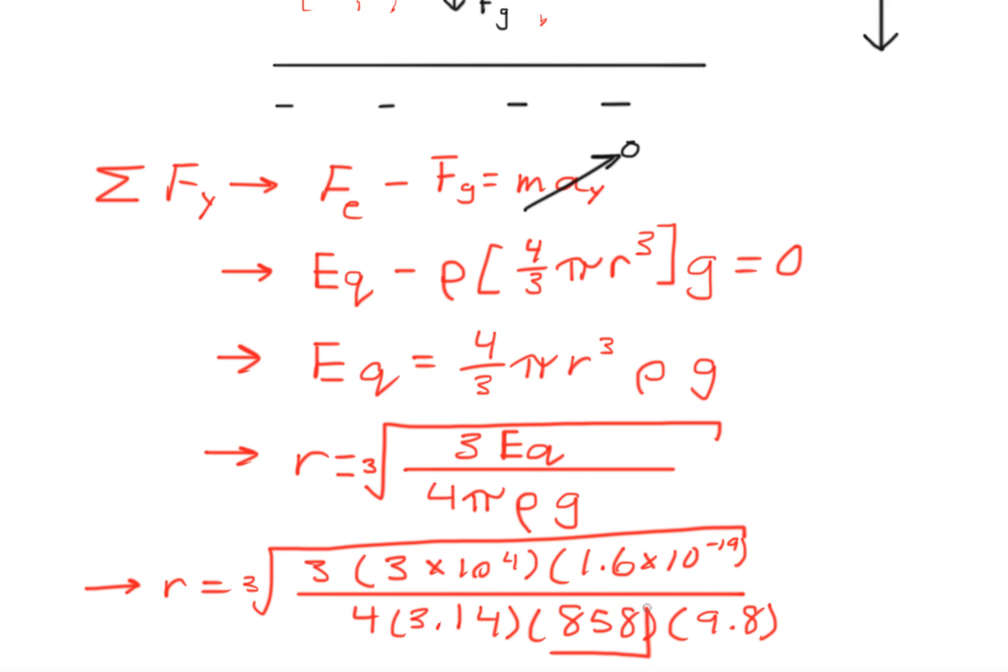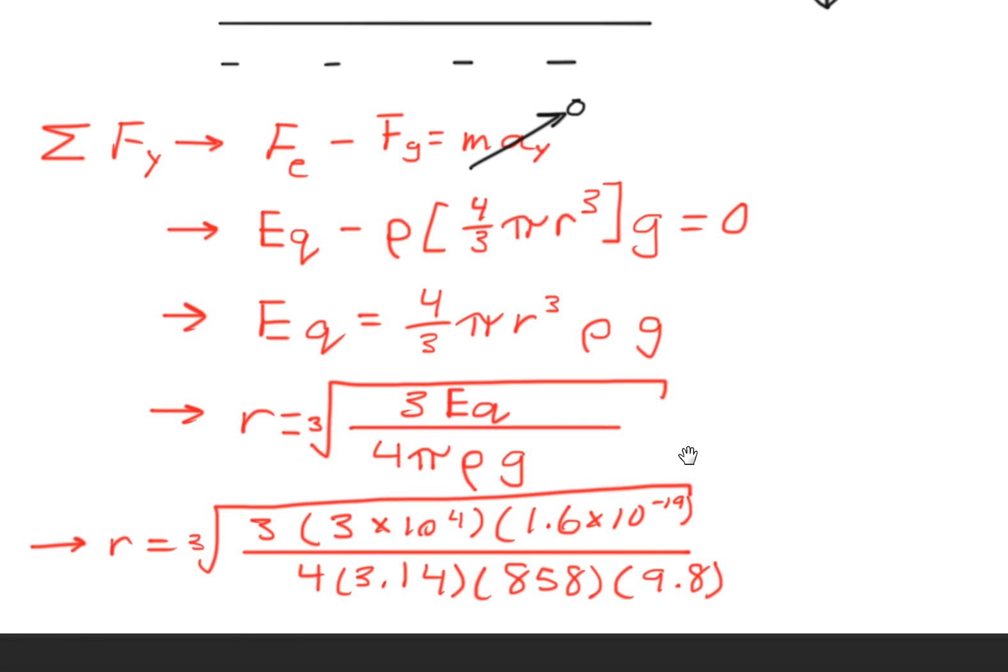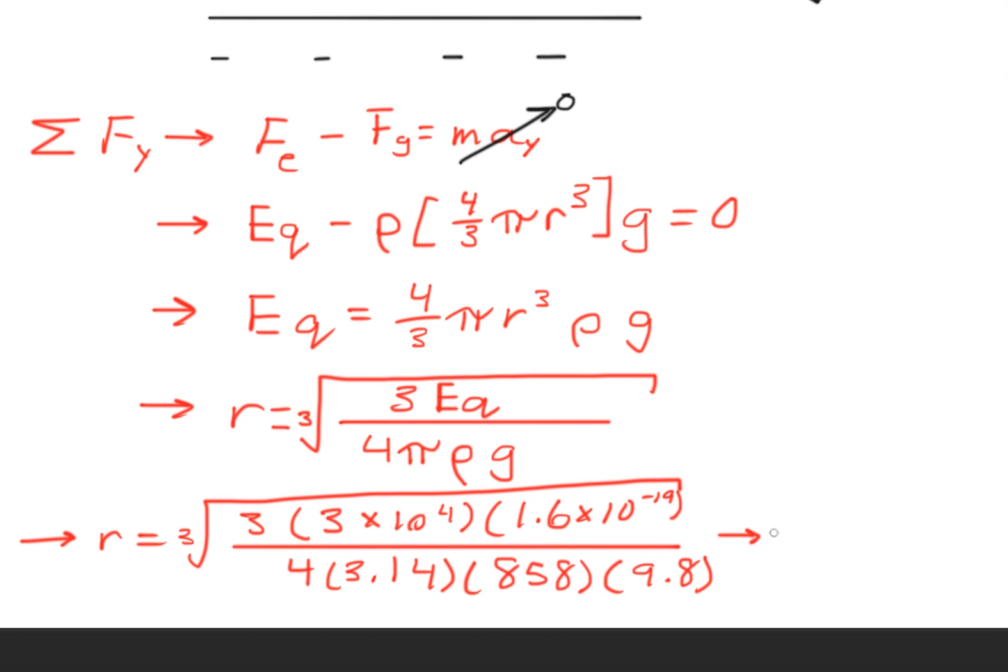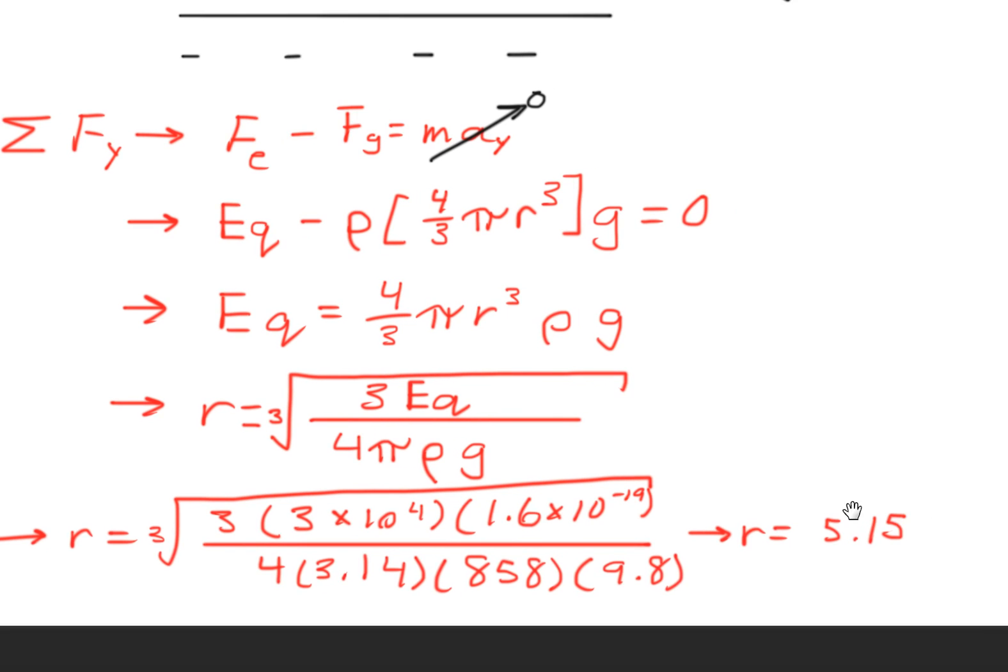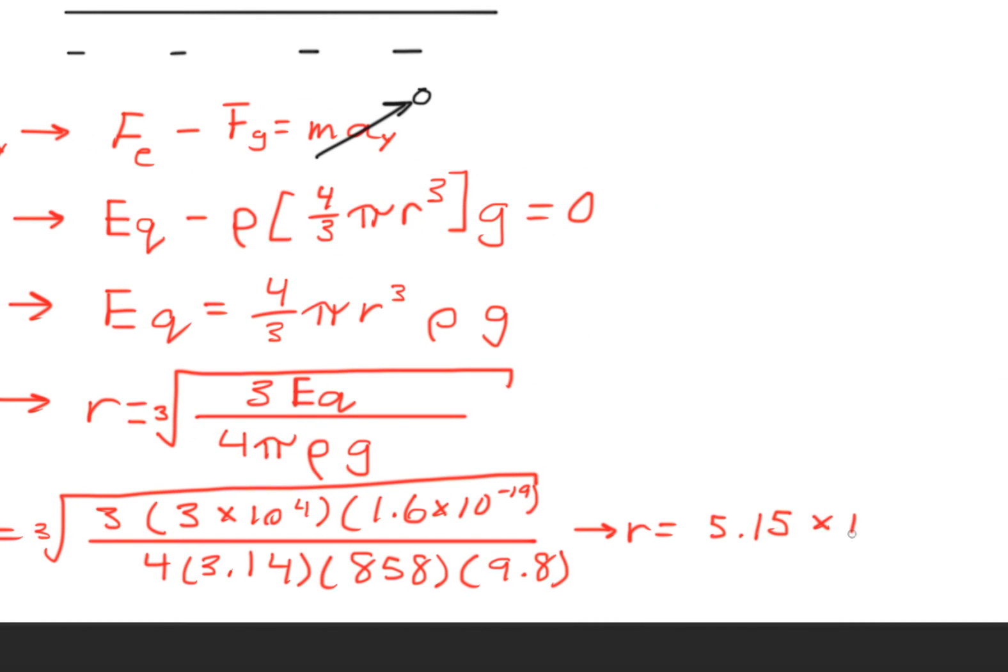This is the density, and this is the acceleration due to gravity. Ultimately, we would get a radius of approximately 5.15 × 10⁻⁷ meters.